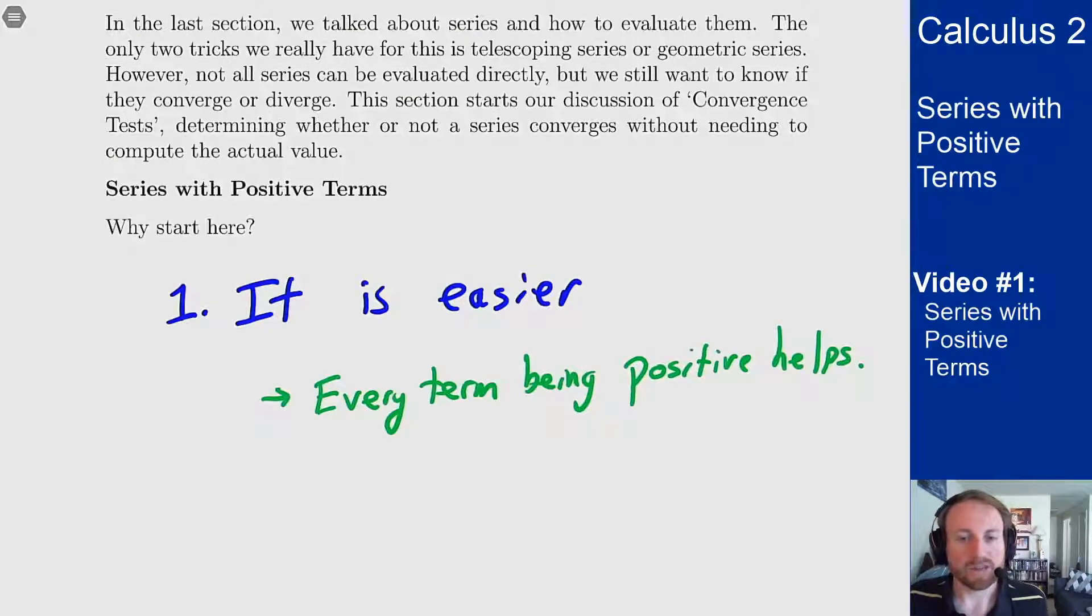And the second reason why we start here is that we can actually convert any series that doesn't have only positive terms into one that does just by taking absolute values. And that'll give us some other methods to try to figure out if those series converge by just making them all positive, taking absolute values first and then applying these methods to them.